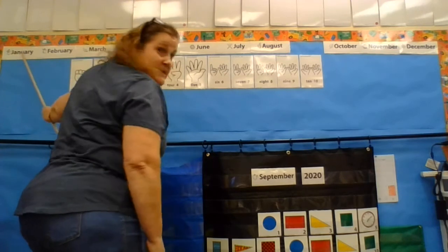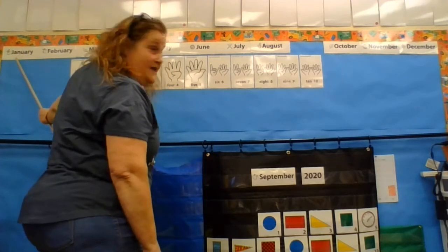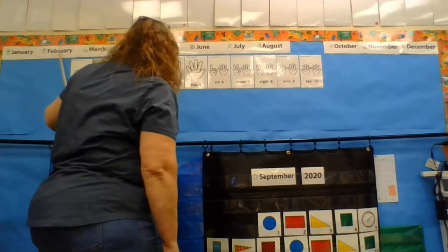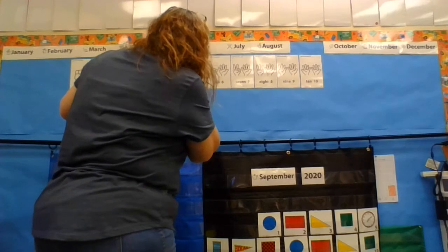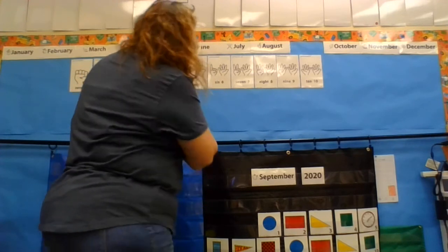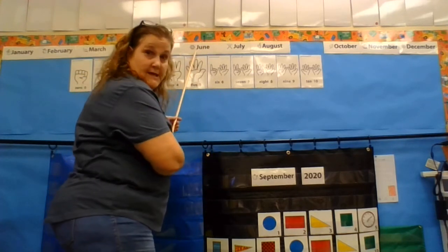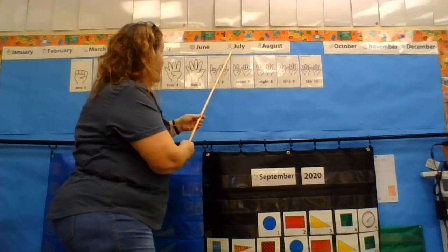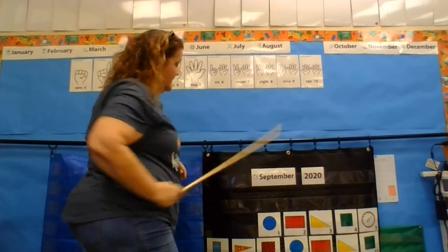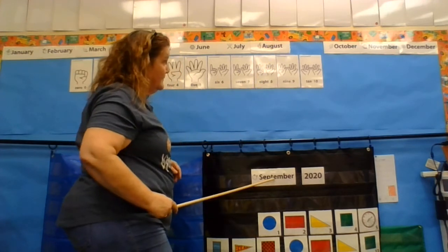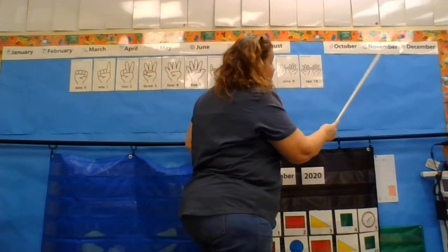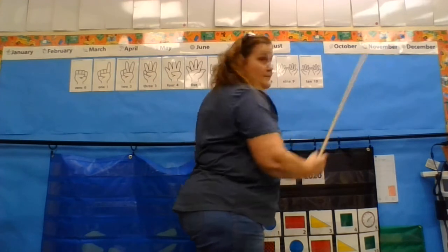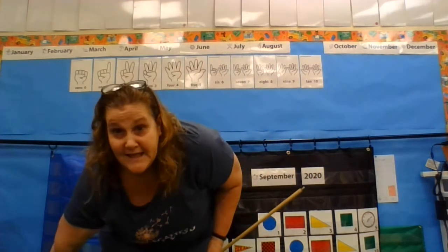We're gonna start with January, February, March, April, May, June, July, August, September, October, November, December. Those are the months of the year.